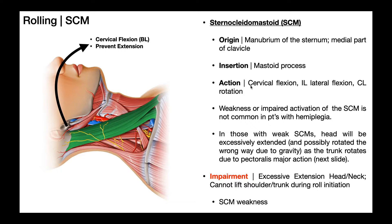Bilaterally, if both sternocleidomastoids contract at the same time, it produces cervical flexion. Individually, the sternocleidomastoid also facilitates ipsilateral lateral flexion and contralateral rotation. In other words, if the left sternocleidomastoid contracts, it can promote left lateral flexion or right rotation of the neck.